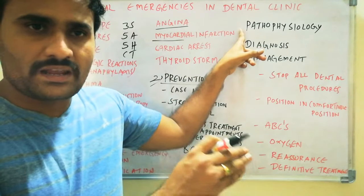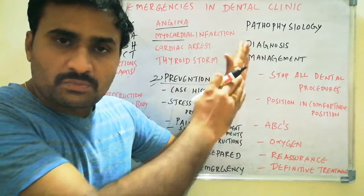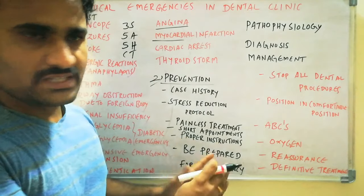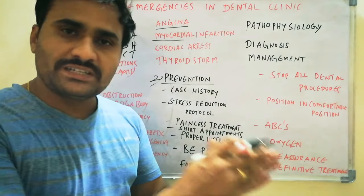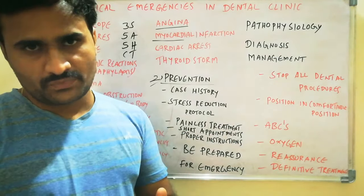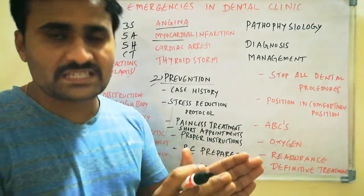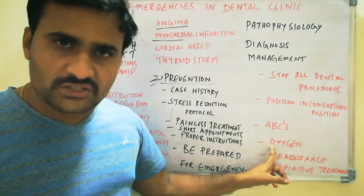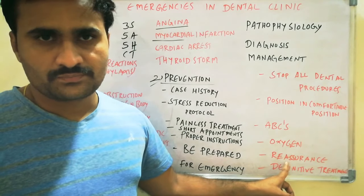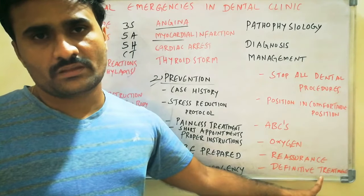Among these 16 medical emergencies, every condition should be discussed under three headings: underlying pathophysiology, diagnosis, and management. In management, there are common points applicable to any emergency: stop all dental procedures, position the patient comfortably — except syncope where you use Trendelenburg position — follow the ABCs (airway, breathing, circulation), administer oxygen, reassure the patient, and then provide definitive treatment with specific drugs.